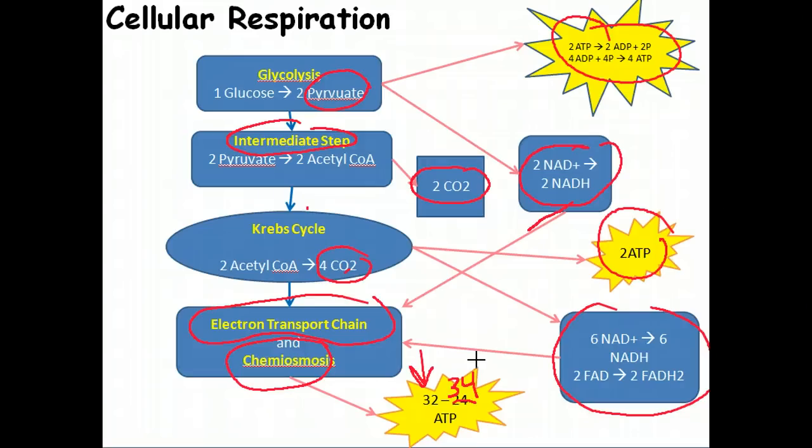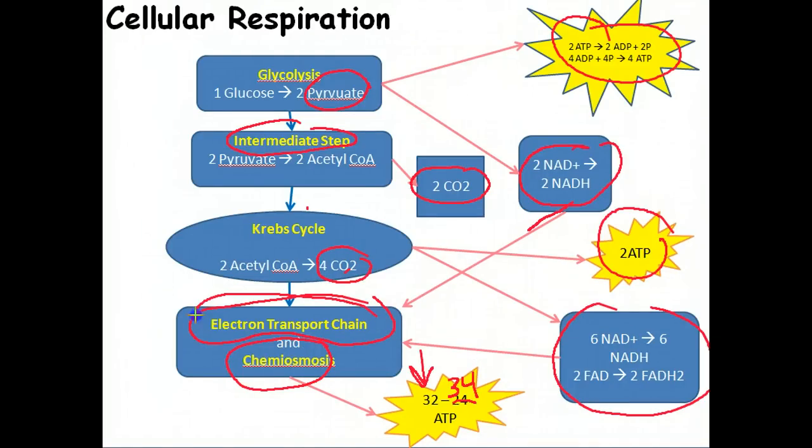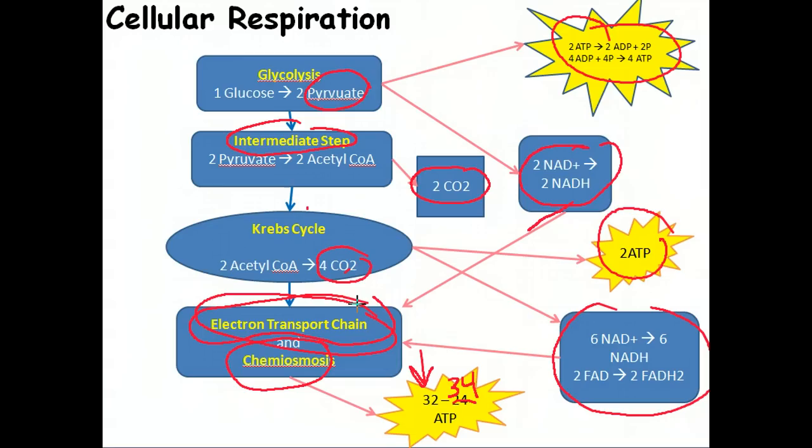At that point, cellular respiration is done, but it's in the electron transport chain where the difference lies between aerobic and anaerobic cellular respiration. Let's go to the next slide and look at the electron transport chain in a little more detail.